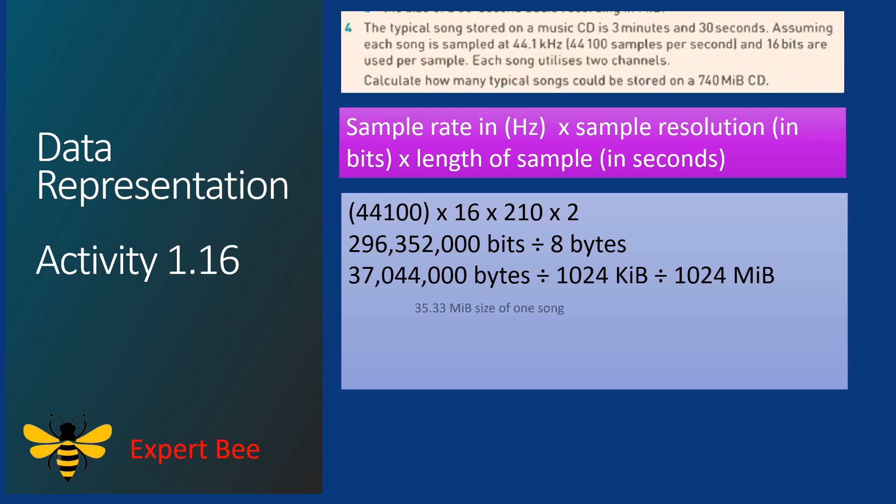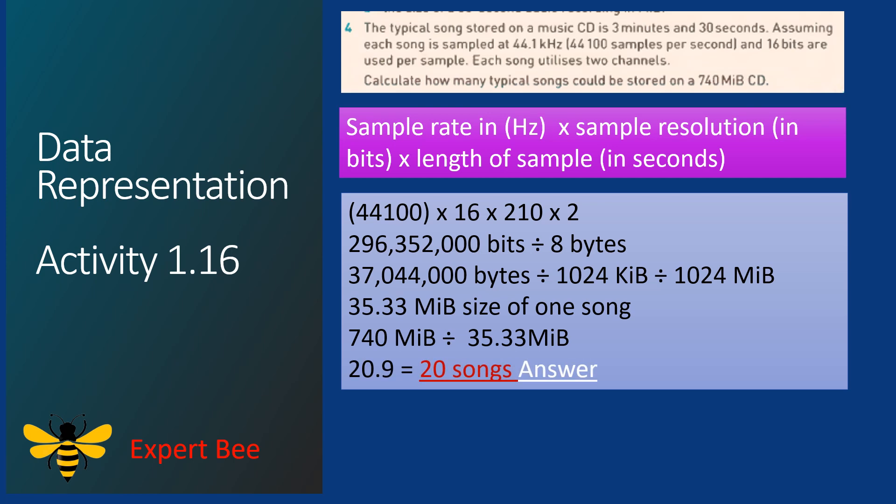We get 35.33 megabytes, which is the size of 1 song. To find how many songs fit on a 740 MB CD, we divide 740 by 35.33 to get 20.9. Since the number of songs cannot be a decimal, the answer is 20 songs — the total number that can be stored on a 740 MB CD.